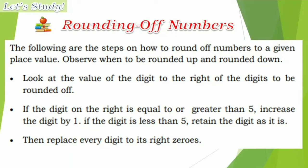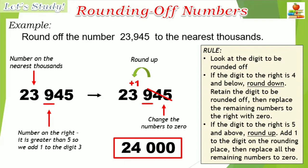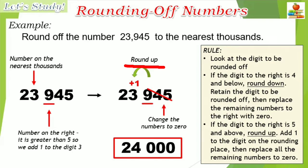The following are the steps on how to round off numbers to a given place value — observe when to round up and round down. If we are going to round off 23,945 to the nearest thousands, look at the digit to be rounded off: 3 is in the thousands place. The number to its right is 9. If the digit to the right is 4 and below, we round it down. If it is 5 and above, we round it up — we add 1 to the digit in the rounding place. So 3 becomes 4 and the remaining digits become 0. Therefore, 23,945 rounded to the nearest thousands is 24,000.